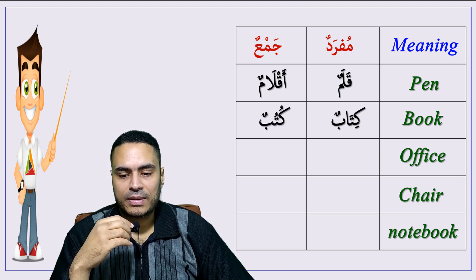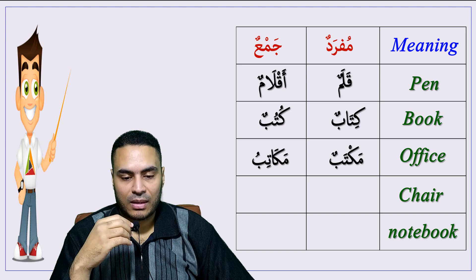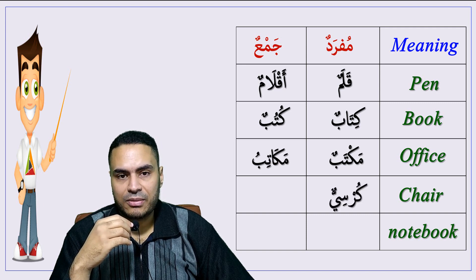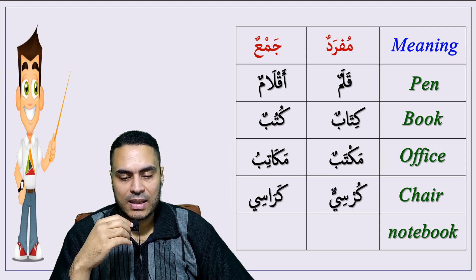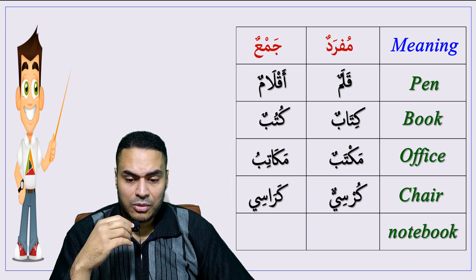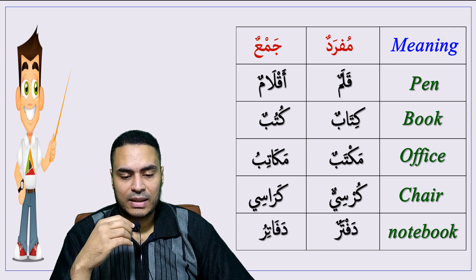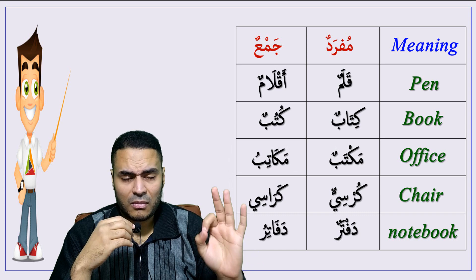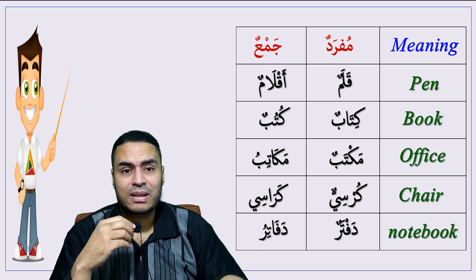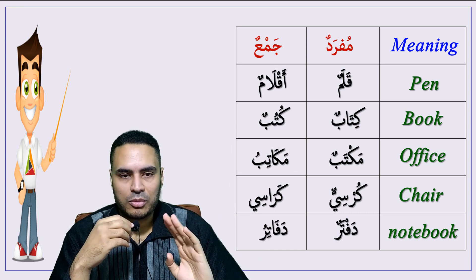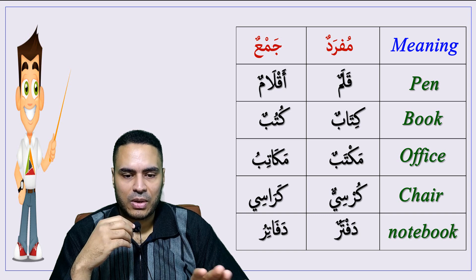Office — maktabun, plural: makatib. Chair — kursiyun, plural: karasi. Notebook — daftarun, plural: dafatiru. You have to know about these words — they are irregular. You have to memorize them; you don't have any rule, so you just have to memorize them.